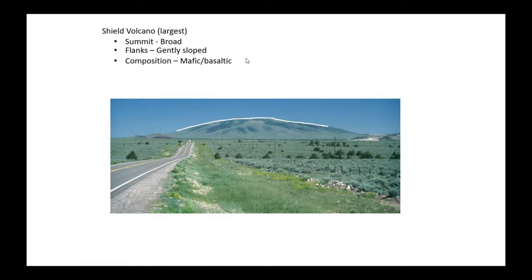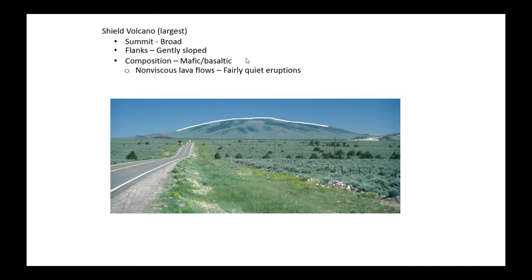The composition of shield volcanoes is mafic basaltic, and so that allows them to form at higher temperatures. When magma forms at higher temperatures, it tends to be more non-viscous, more fluid. This allows gases to escape much more easily, and you have fairly quiet eruptions. You can have extensive lava flows, but they are not catastrophic — there are no massive pyroclastic flows and things like that.